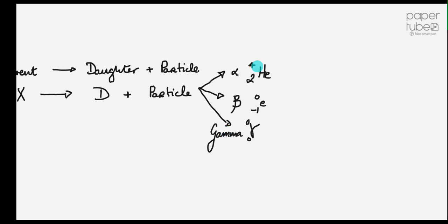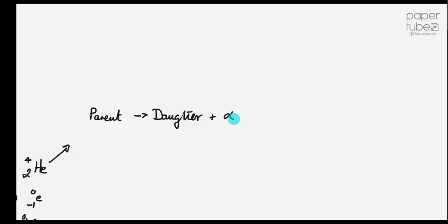So we're going to look at the general rule for this one here first. The parent will be A cross Z, goes to the daughter plus the alpha 4, 2, He. Now watch the blue dot on the screen. The atomic number and the atomic mass on this side has to equal the atomic number and the atomic masses on this side. So this daughter will definitely be A minus 4, that will be the atomic mass, because A minus 4 add 4 gives me A.